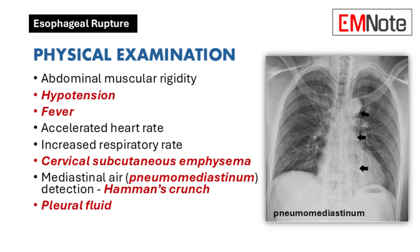During a physical exam, healthcare providers may notice signs such as abdominal rigidity, low blood pressure, fever, rapid heart rate, and increased breathing rate. Additional findings may include subcutaneous air in the neck, a crunching sound heard with a stethoscope known as Hamman's Crunch, and fluid buildup in the pleural space.